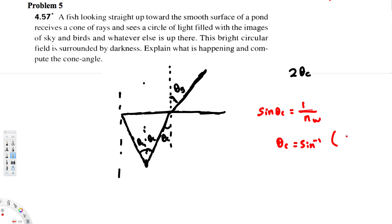...one over n_w. And index of refraction of water is 1.33, so we can put that one right here: 1.33. And if you calculate this one, you will get 49 degrees. So this is our theta_c.